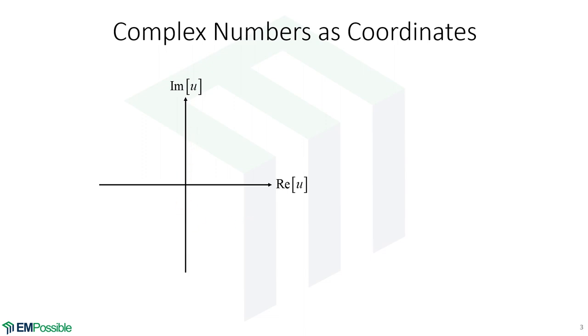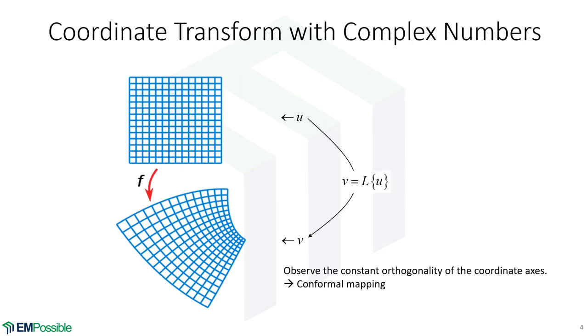Now we can do math on those complex numbers and just the properties of complex numbers will enforce that our new system, while maybe deformed and contorted, those crossings will still always be at 90 degrees. And that's the concept of conformal mapping.